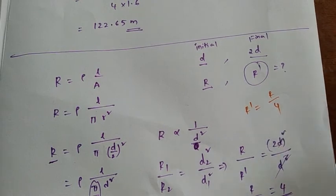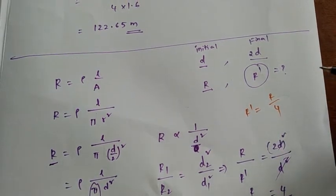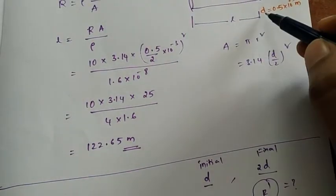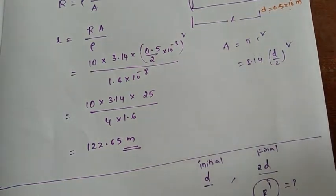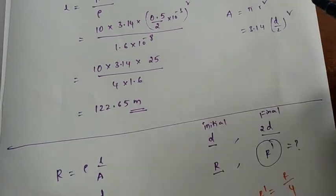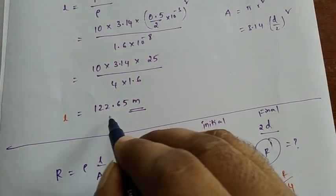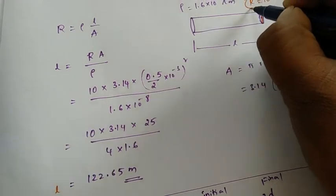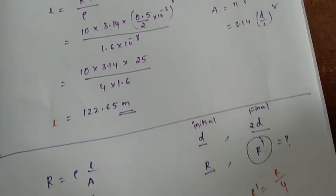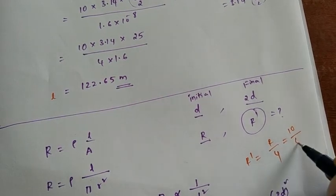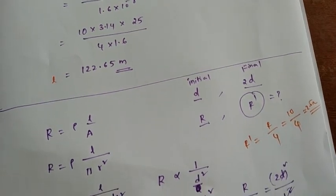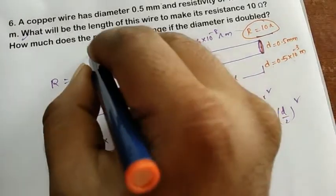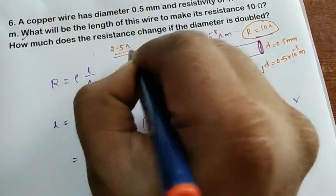Taking the initial conditions — diameter 0.5 × 10⁻³ m, length 122.65 m, initial resistance 10 ohms — the new resistance R' = 10/4 = 2.5 ohms. So the final resistance when the diameter is doubled will be 2.5 ohms.